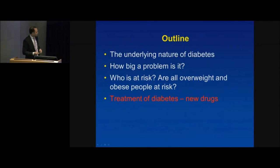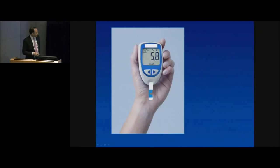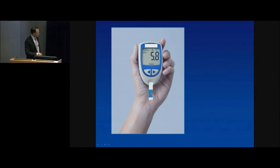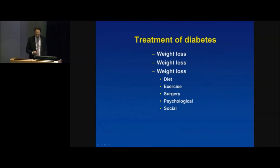What about the treatment of diabetes? I'll talk about new medications shortly, but the underlying goal is to keep everybody's blood sugar levels in the normal range. The treatment is weight loss — or more precisely, fat loss. We don't need people to lose 25 kilograms — reducing body fat by just 5% reduces the risk of developing diabetes and improves diabetes control significantly.